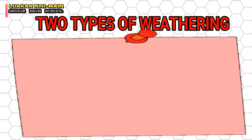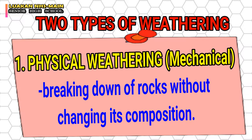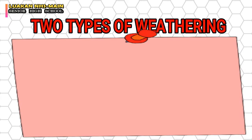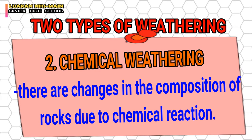There are two types of weathering: the first is physical, and the second is chemical weathering. When we say physical weathering — also called mechanical weathering — this is the breaking down of rocks without changing their composition. A large rock can break into pieces but the mineral composition does not need to change. However, with chemical weathering, the rock breaks apart and its composition is also changed — there are changes in the composition of rocks due to chemical reaction.